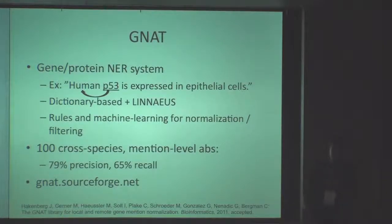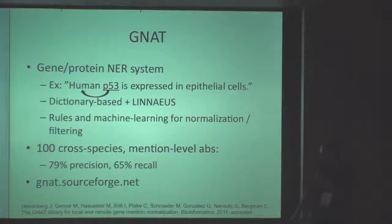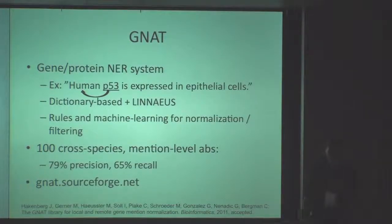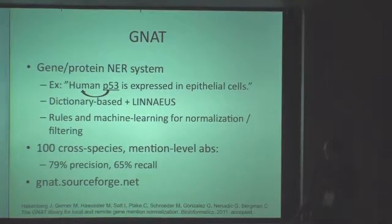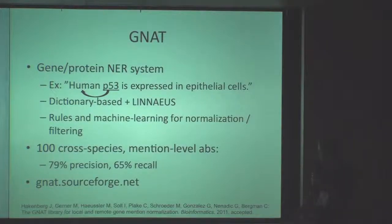Another entity recognizer available is called Gnat, which finds genes and proteins — this is much more challenging. In the example, it's about locating 'P53' and recognizing which protein or gene we're talking about, then linking it to the correct identifier. This depends mostly on the species, which turns out to be the critical thing to recognize. So Gnat is also based on Linnaeus, because once you recognize that a sentence is talking about human, it becomes easier to figure out which gene it's dealing with.